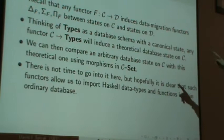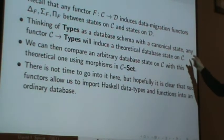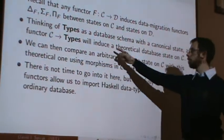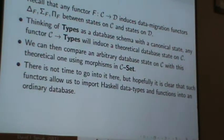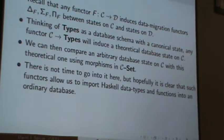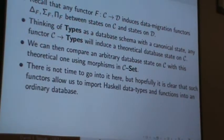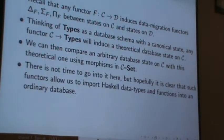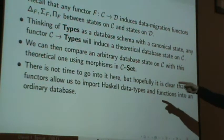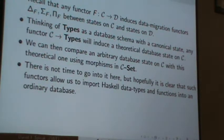So these functors, so remember that any functor from C to D induces these, quote-unquote, data migration functors, and you don't have to remember that very well, but thinking of types as a database schema with a canonical state, any functor from some random database schema, from a C to types will induce a theoretical database state on C, where you have like all those types, all those values listed for every column, for every table in C. But then you could compare an arbitrary database state on C with this theoretical one using morphisms in C-Set, and it's actually a little bit different than what I'm saying here, because, but anyway, there's not time to go into it, but hopefully it's clear that, and if you want more information you can read somewhere else, that hopefully it's clear that this allows you to import Haskell data types and functions into an ordinary database and have kind of typed or, and calculated fields and things like this. I don't see that at all.